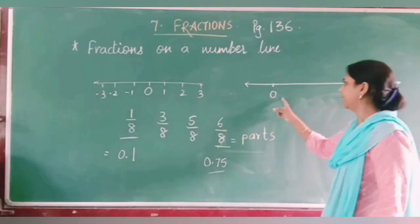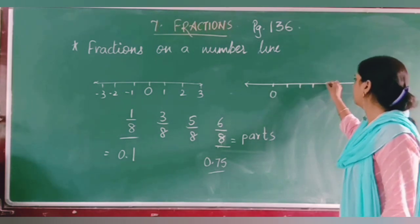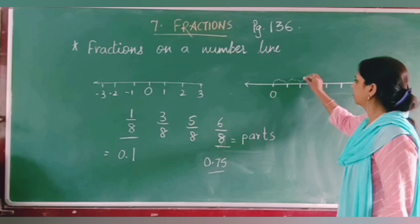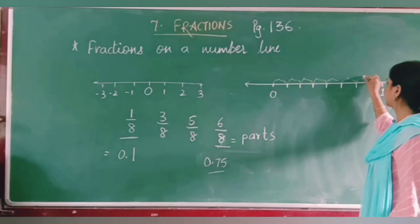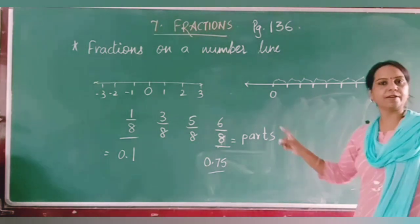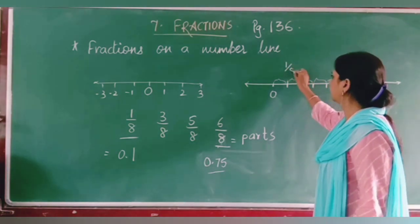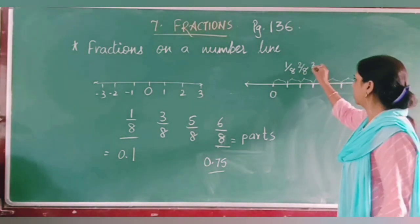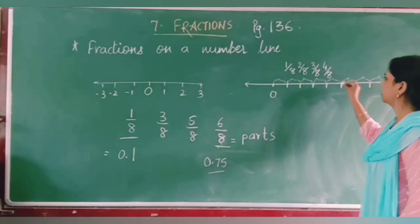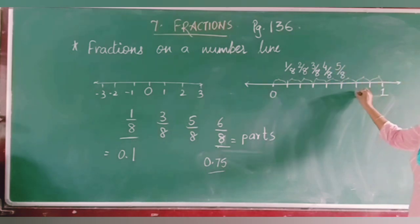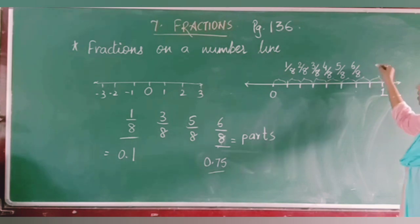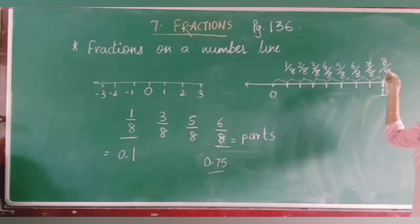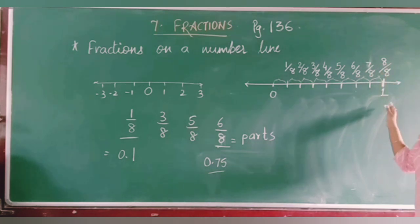Now, the denominator is 8, so we divide the segment from 0 to 1 into 8 equal parts: 1, 2, 3, 4, 5, 6, 7, and 8. The first part is 1 upon 8, the second is 2 upon 8, third is 3 upon 8, fourth is 4 upon 8, fifth is 5 upon 8, sixth is 6 upon 8, seventh is 7 upon 8, and the last part is 8 upon 8, which equals the whole number 1.